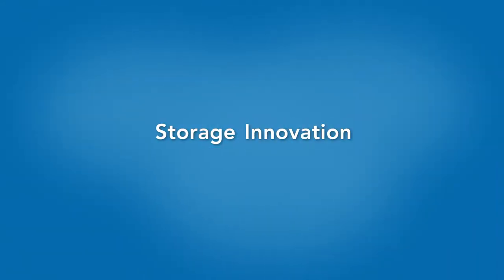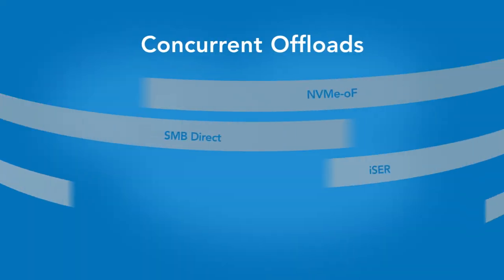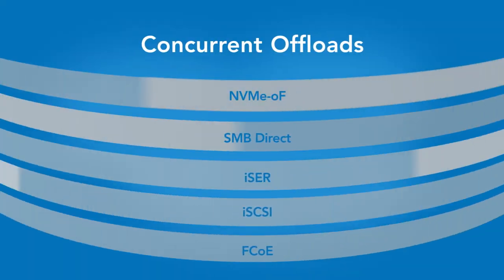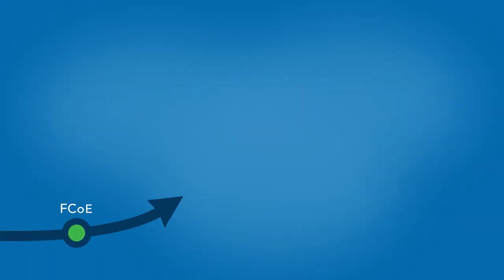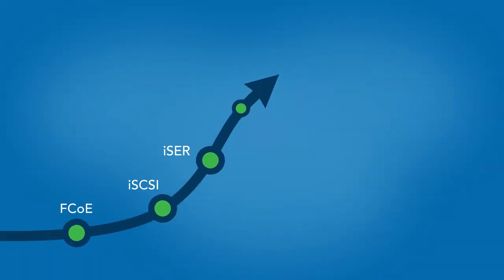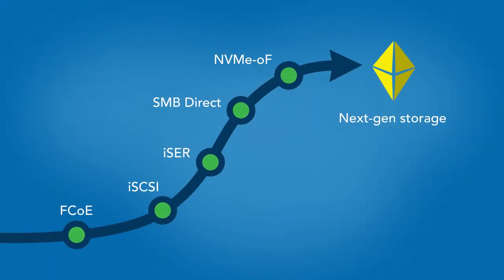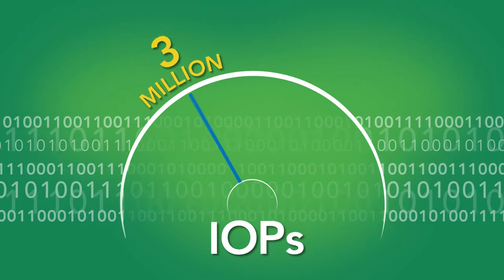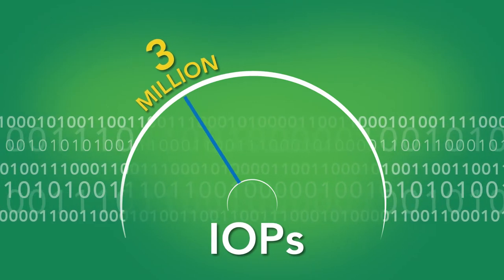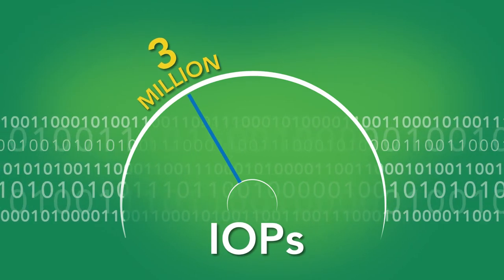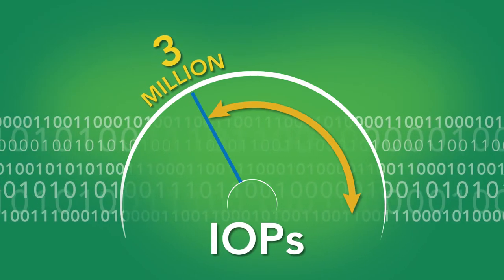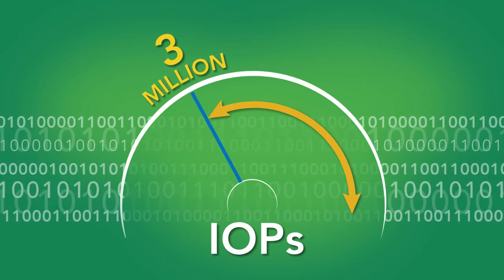Universal storage networking means concurrent offload for all storage protocols. It provides a seamless migration path to next-gen storage, and more than 3 million IOPs with plenty of headroom remaining for virtualized apps.